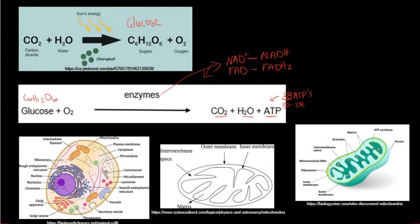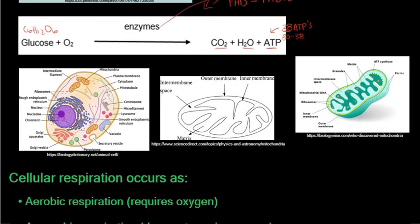Where does cellular respiration occur? Looking at an animal cell, the structure we are interested in is the mitochondria, which is the powerhouse of the cell. Cellular respiration takes place in and around the mitochondria. You also need to be able to draw a mitochondria.